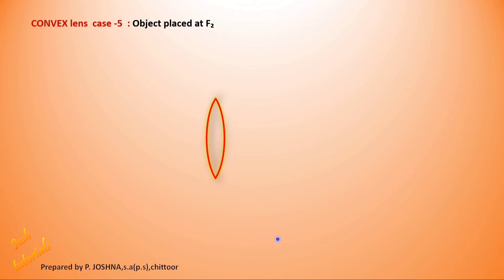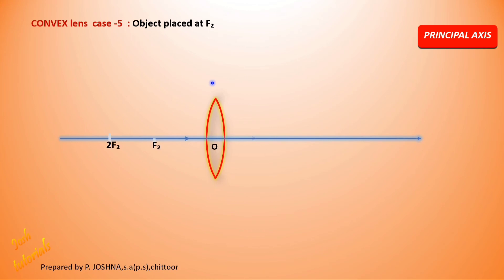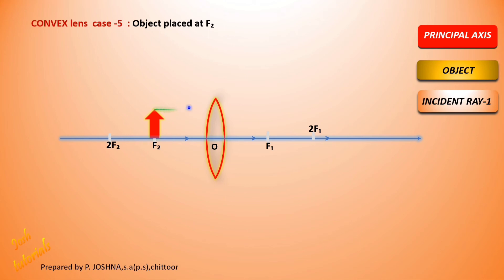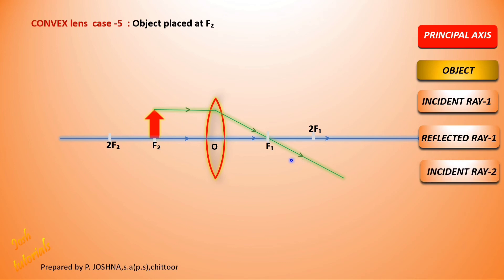Case 5: Object is placed at F2, the focal point. Draw the principal axis and mark the points evenly. Place the object on F2. Draw the first ray parallel to the principal axis — since it is parallel, after refraction it passes through the focal point F1.